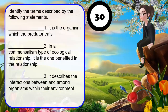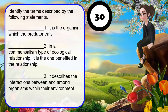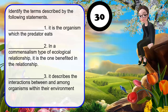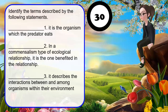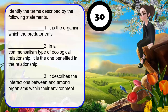Identify the terms described by the following statements. Number 1: It is the organism which the predator eats. Number 2: In a commensalism type of ecological relationship, it is the one benefited in the relationship. Number 3: It describes the interaction between and among organisms within their environment. You have 30 seconds to answer this. Your time starts now!